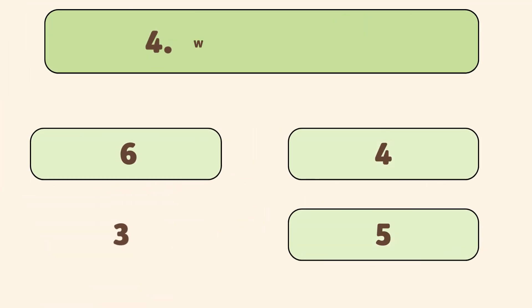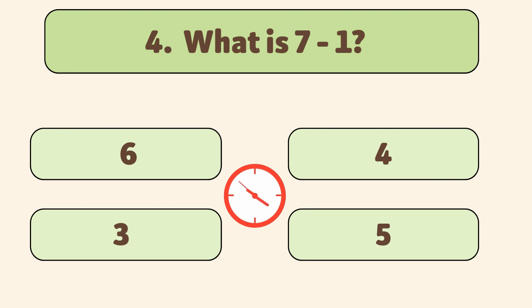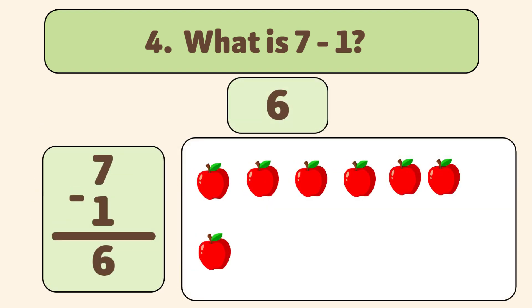What is seven minus one? The answer is six. We start with seven apples and take away one. Let's count: one. We have six apples now.